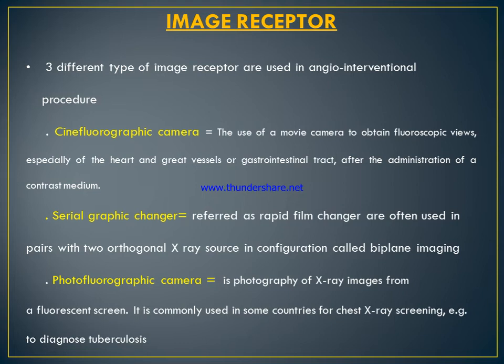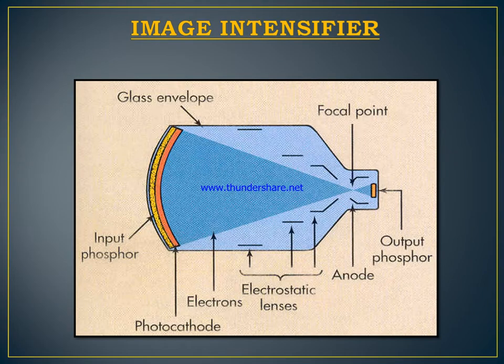The photo fluorographic camera produces fluorographic X-ray images from a fluorescent screen. It is commonly used in some countries for chest X-ray imaging, such as for diagnosis of tuberculosis.